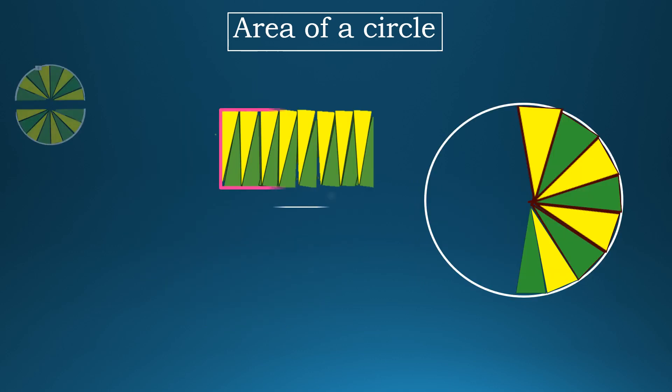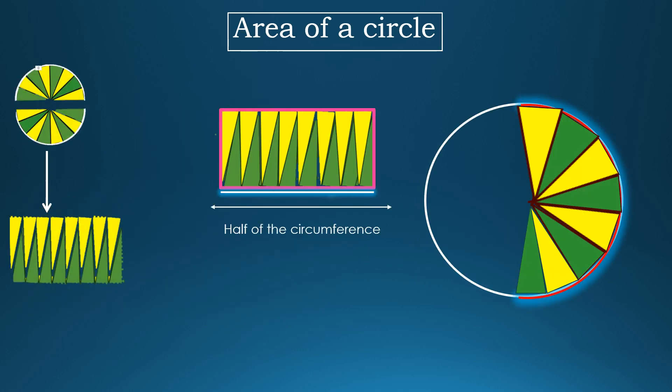The length of this rectangle is equal to half of the circumference of the circle. And the breadth is equal to the radius of the circle.